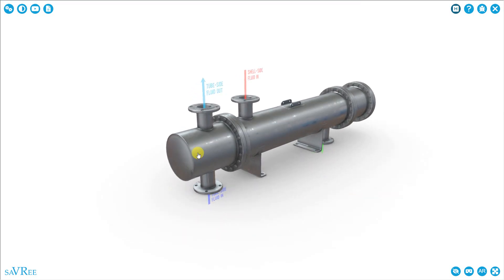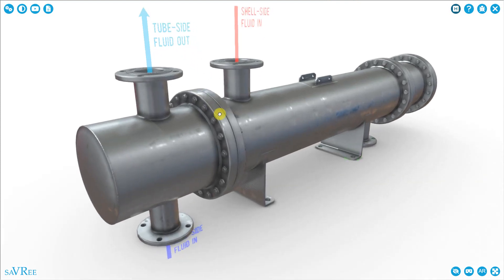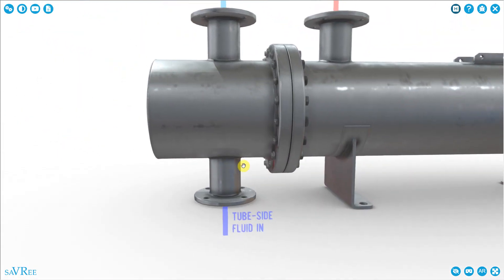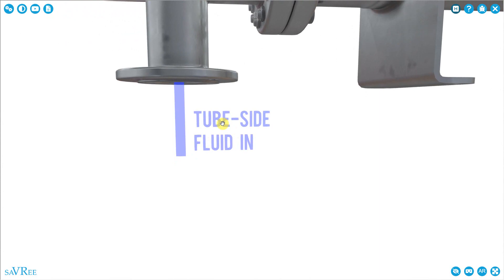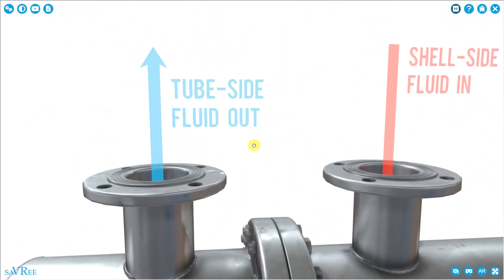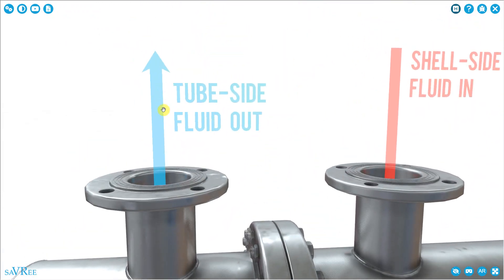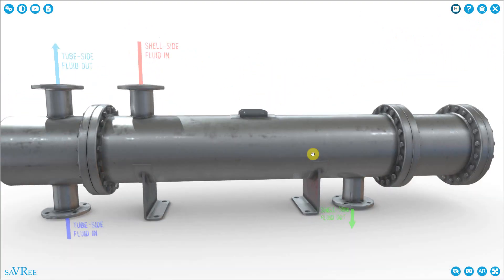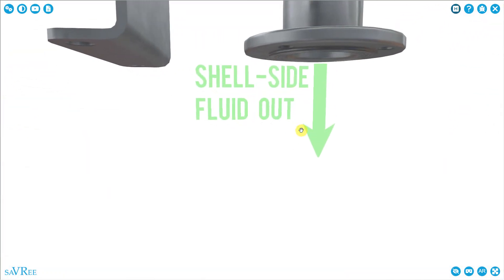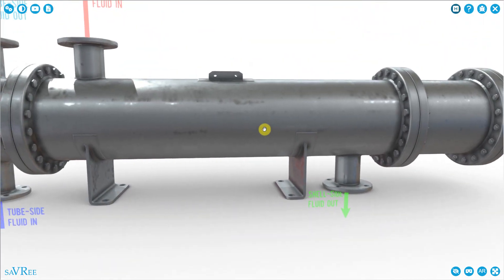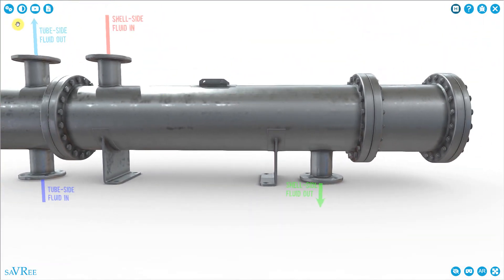Here we have our shell and tube type heat exchanger. We've got tube side fluid coming in here and then tube side fluid exiting over here. We've got shell side fluid coming in, and then shell side fluid going out — so two ins and two outs.